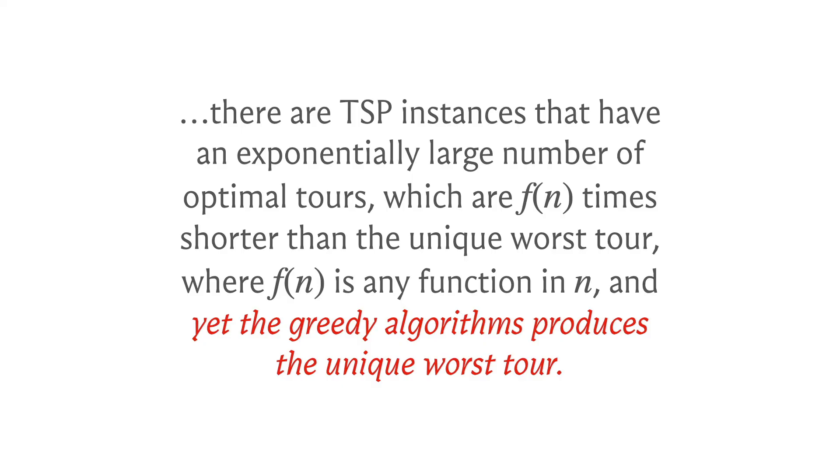Yet somehow the greedy algorithm will end up finding the unique worst solution. Notice there's just one worst solution and greedy will find that one. You can ensure the magnitude by which the solution is worse than optimal is rather large - as large as you want. This quantifiably demonstrates you could construct instances where greedy is as bad in performance as you want it to be.